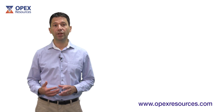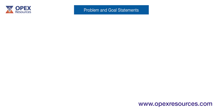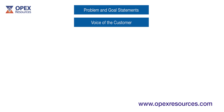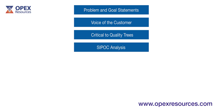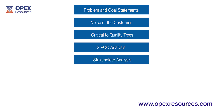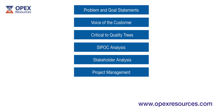Some of the tools that you will hear about in the Define phase of DMAIC are problem and goal statements, which help to clarify the problem, goal and potential benefits of the project. Voice of the customer analysis and critical to quality trees, which help you to understand who the customers are and what they need from the product or service. SIPOC analysis, which is a tool for defining and understanding the core process involved. Stakeholder analysis and project management tools that can be used to establish how the project and its stakeholders will be managed.